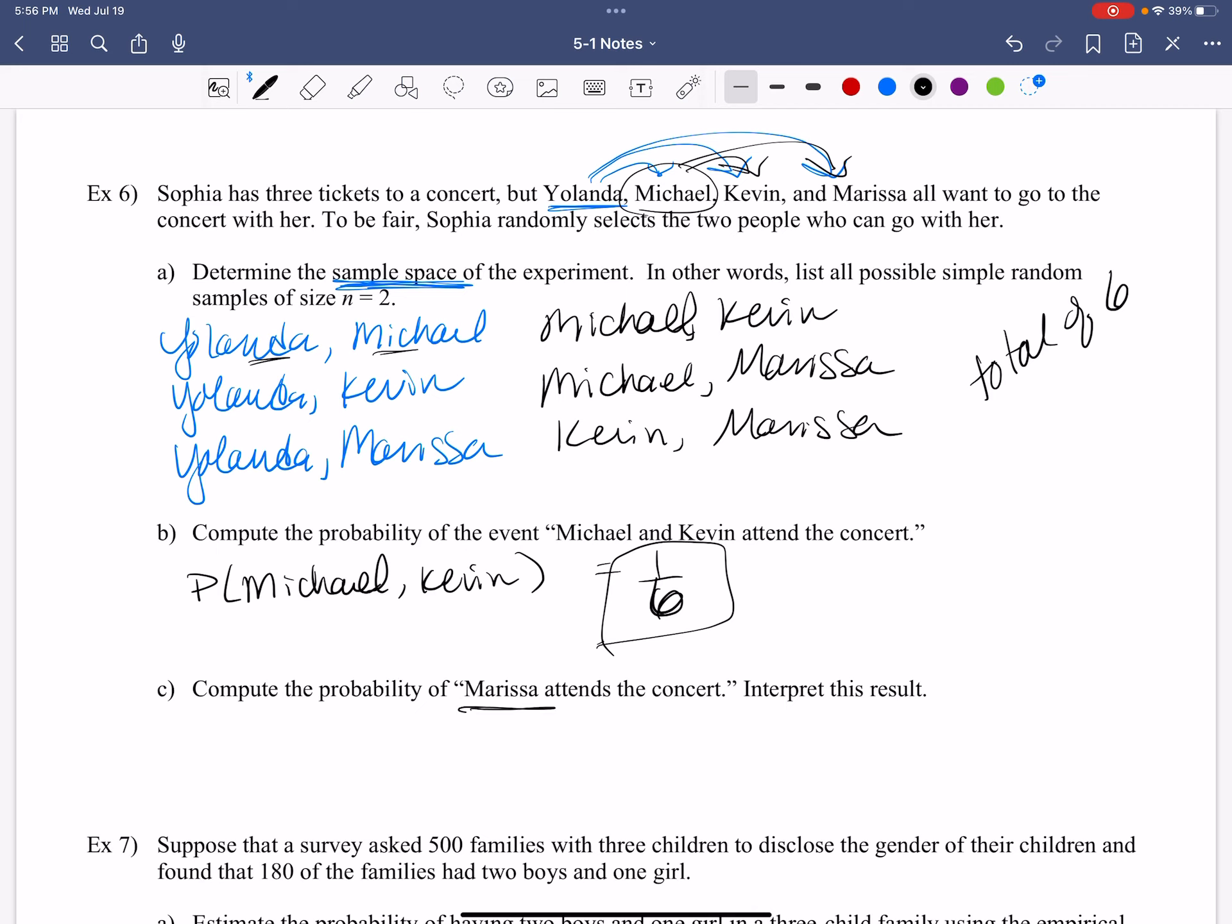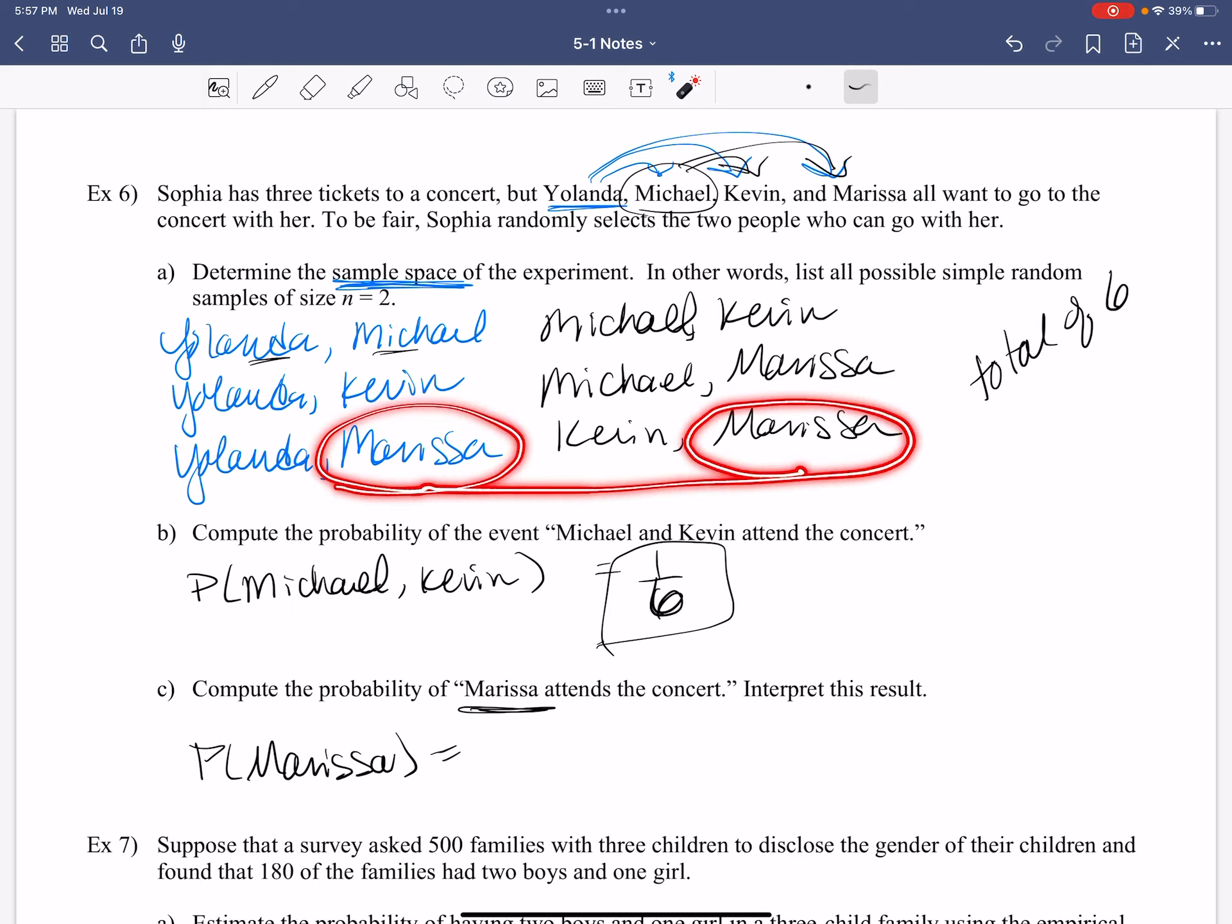What's the probability that Marissa gets to attend? No matter who she's going with. What's the chance that Marissa gets to go? She could go here. She could go here. She could go here. How many options does Marissa have to go to the concert? Three times, right? Different people, but that's not what it's asking. Just Marissa in general. So three out of six, which is one half.